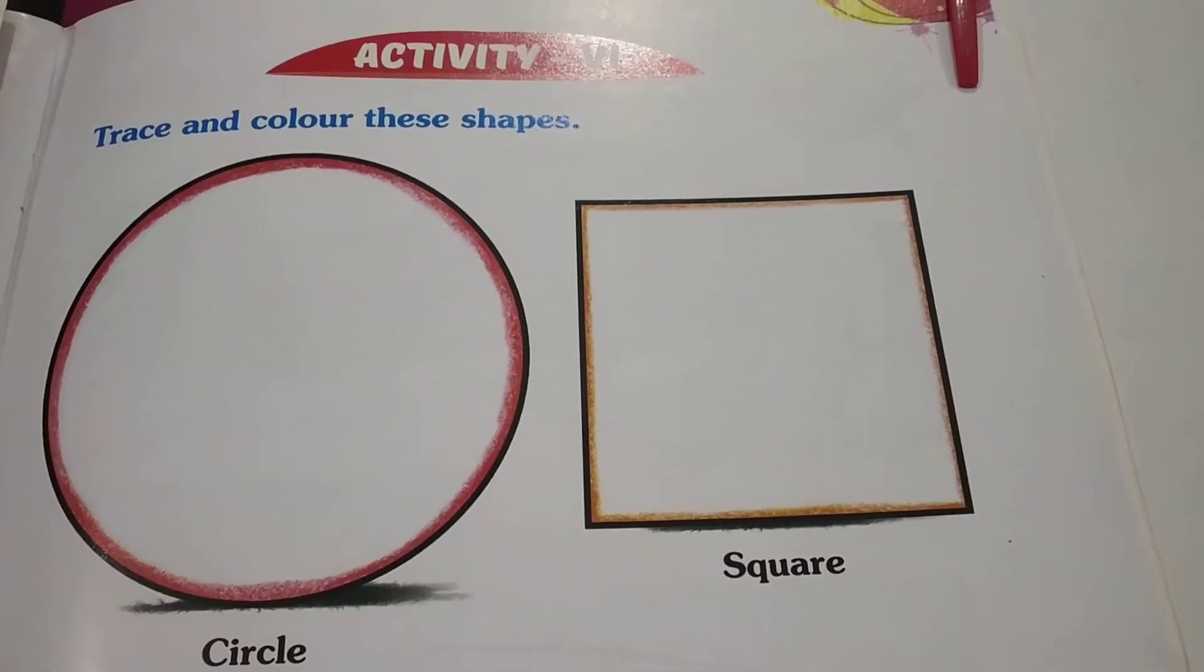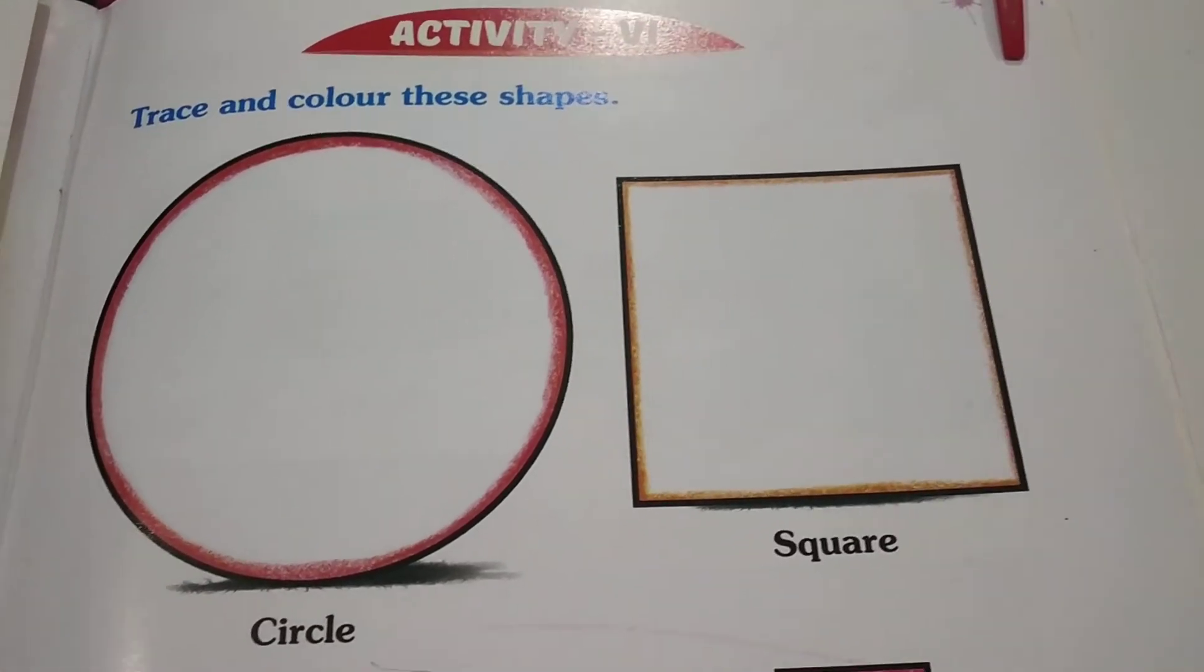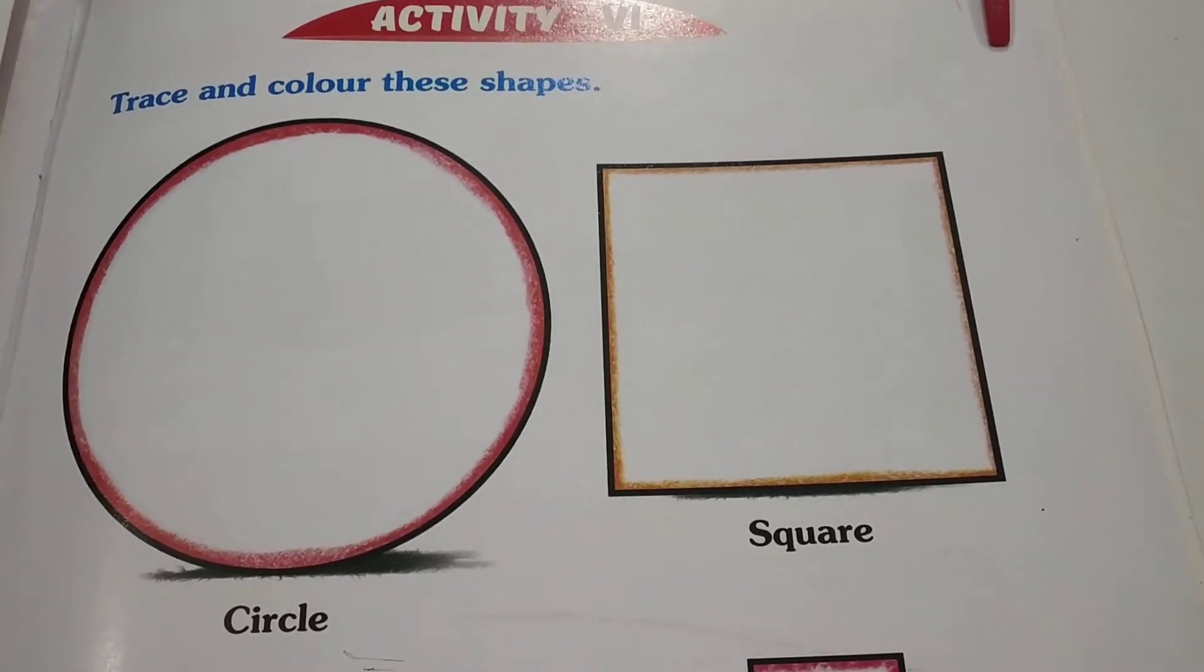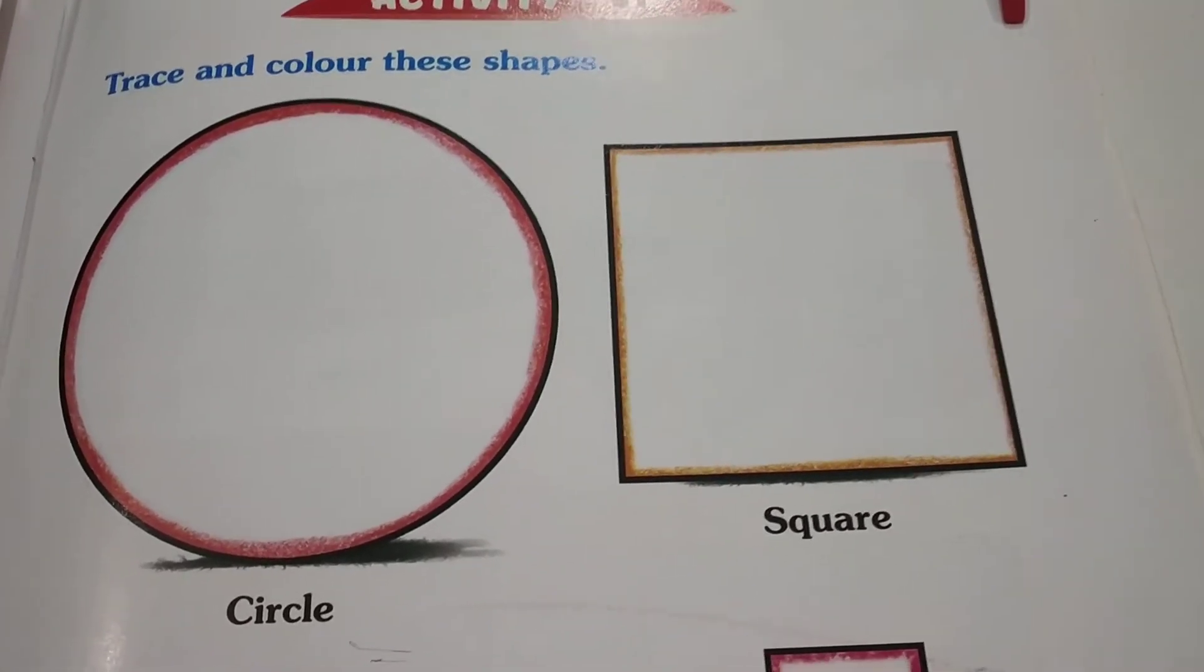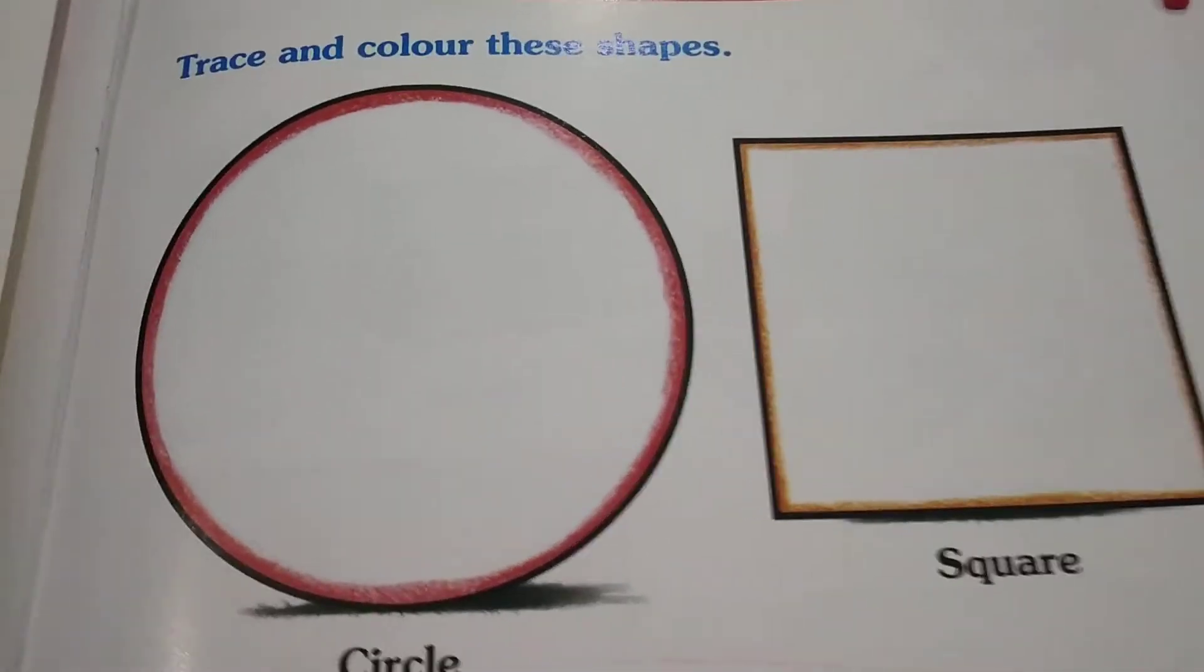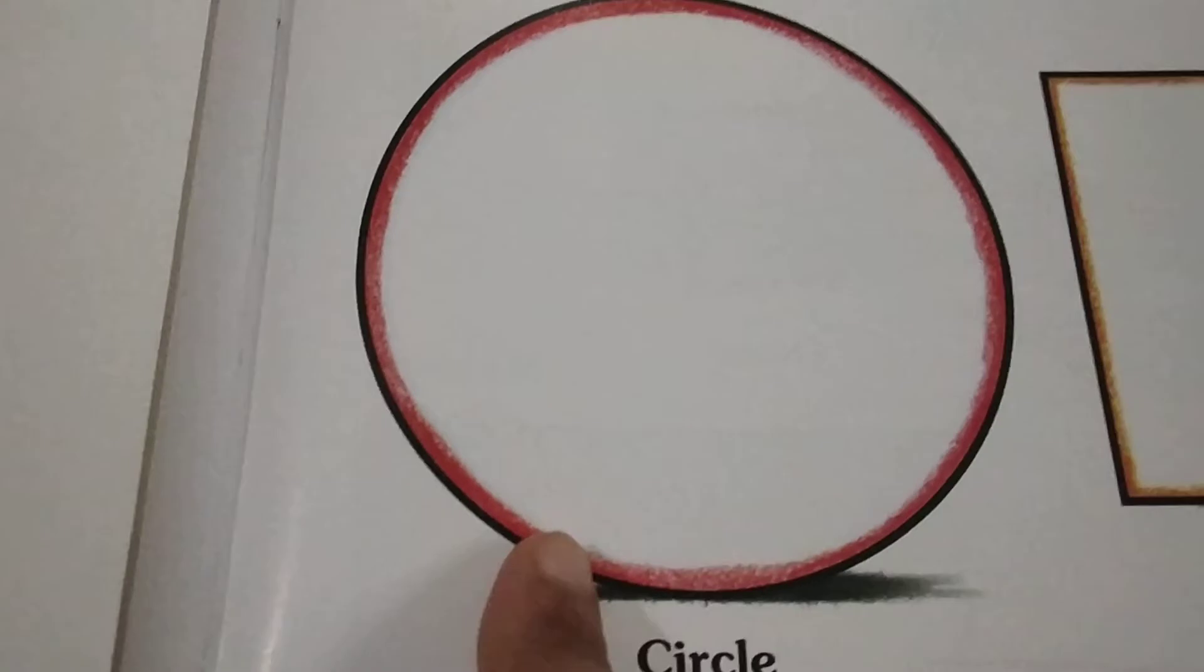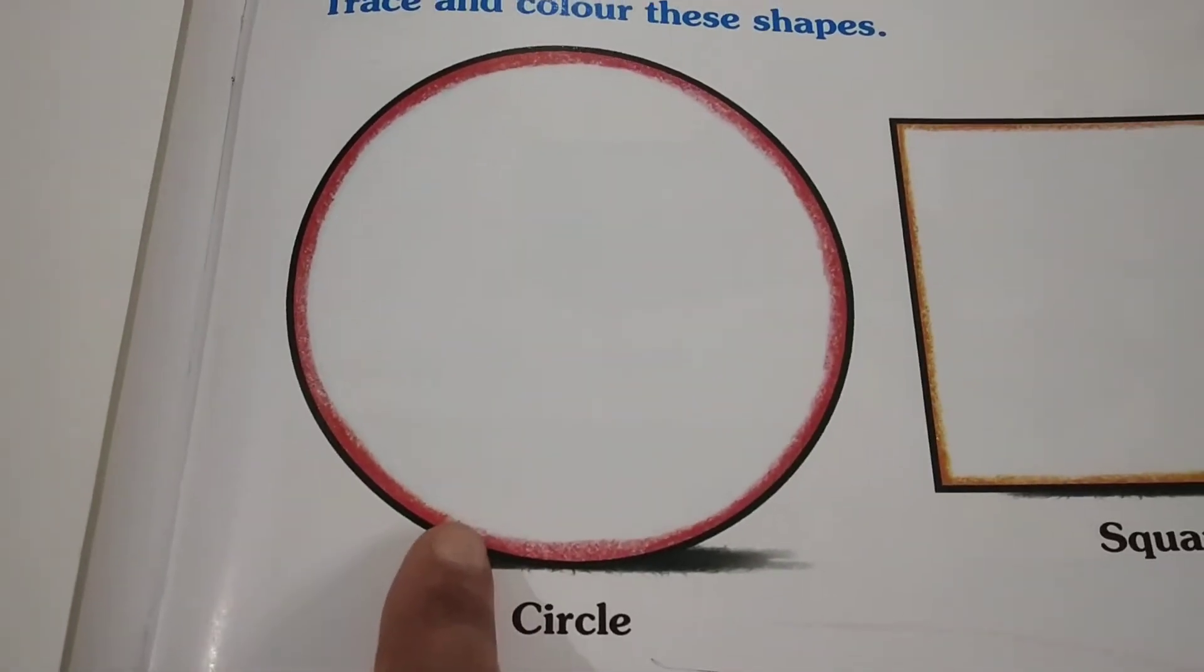Good morning dear kids, today our subject is EVS and the topic is shapes. Today we will learn about different shapes. Let's start. Here is the first one, this is a circle. See, this is a circle. Repeat after me: circle, circle.